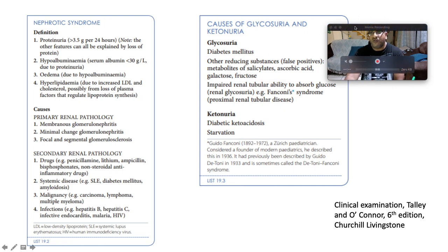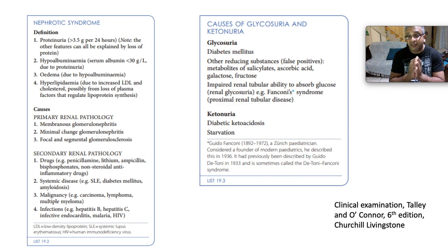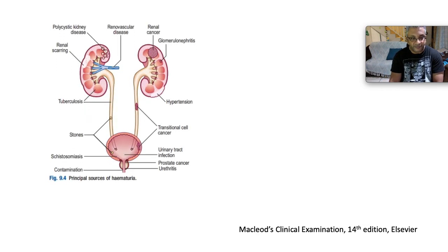Common causes of glycosuria and ketonuria: the poster child for glycosuria is diabetes mellitus, but other reducing substances can also cause it, as well as impaired renal tubular ability to absorb glucose — especially affecting the proximal tubules. If that is the case, there will also be leakage of protein and other substances, which is called Fanconi syndrome. Ketonuria commonly occurs with diabetic ketoacidosis, starvation, and alcoholic ketoacidosis.